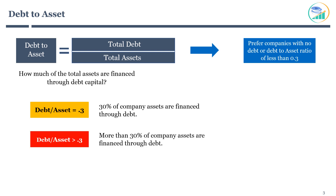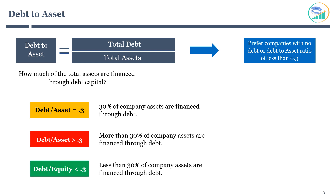More than 0.3 indicates the company is highly leveraged and investors should be careful. Lower than 0.3 indicates equity capital is relatively higher than debt and less than 30% of company assets are financed through debt. As a stock investor, you should closely monitor these ratios to ensure your company is not highly leveraged. The higher the debt to asset or debt to equity ratio, the higher is the risk of investing and the probability of permanent loss of capital in case of an economic downturn.